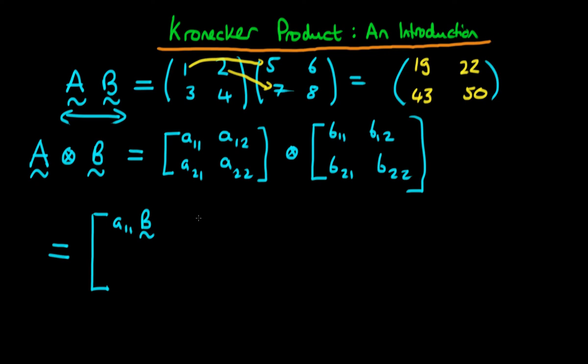The next four components on the top right are A12 times the matrix B. Then in the bottom left, A21 times the matrix B, and in the bottom right, A22 times the matrix B. So we've taken each component of A and multiplied it by the entire matrix B.